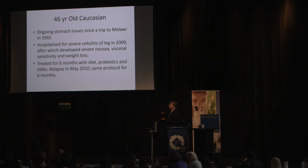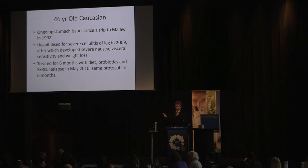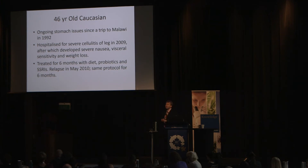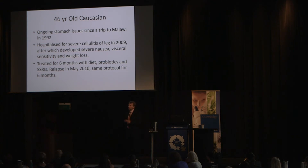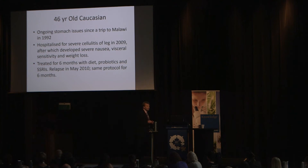In 2009, he had severe cellulitis of his leg, after which he developed severe nausea, visceral sensitivity, and weight loss. After that he was treated for six months with diet, probiotics, and serotonin reuptake inhibitors. He had a relapse in May 2010 and was given the same protocol for six months. What causes problems after being treated for an infection? Antibiotics. Common results of antibiotic therapy on mucosal complexity: we lose diversity, likelihood of gene transfer, change in compositional ratios. Sometimes they recover spontaneously; sometimes they don't.